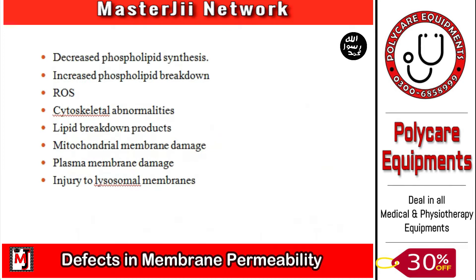Last time we were discussing about reactive oxygen species. We studied how they are generated, which mechanisms can decrease free radical production. We also studied that when reactive oxygen species cause cell injury, the main reactions that occur include oxidation of lipids in the membrane, protein synthesis will stop, and DNA will be damaged.